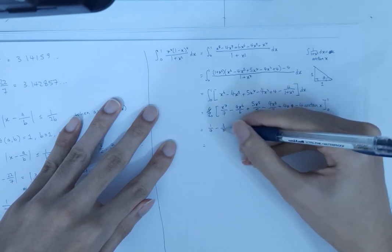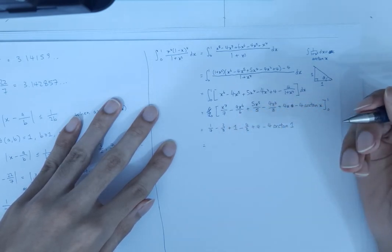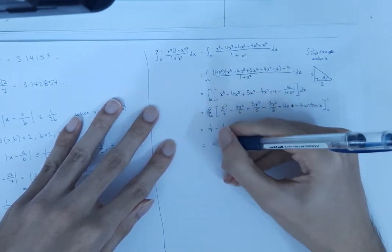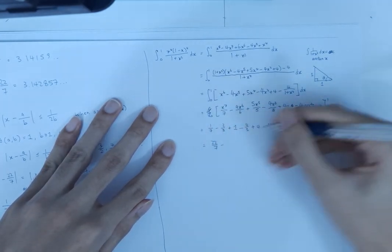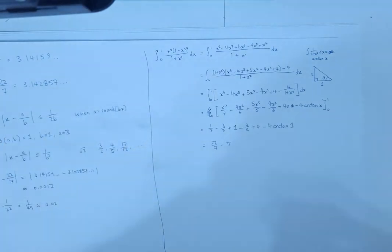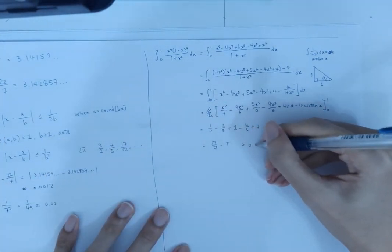So 1 plus 4 is 5, minus 2 thirds, minus 4 thirds, so this minus 2 thirds and minus 4 thirds together become minus 2, so 5 minus 2 is 3, 3 plus 1 over 7 is 22 over 7, minus 4 times pi over 4, so that's minus pi. And this thing we just evaluated here is approximately 0.0012.